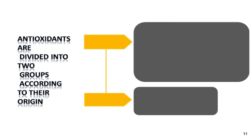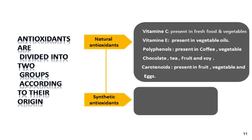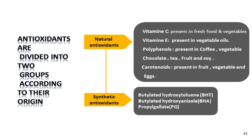We have another classification according to their origin: natural antioxidants and synthetic antioxidants. Natural antioxidants include vitamin C, present in fresh fruits and vegetables; vitamin E, present in vegetable oils; and polyphenols, present in coffee, vegetables, chocolate, tea, and fruit. Synthetic antioxidants include butylated hydroxytoluene, butylated hydroxyanisole, and propyl gallate.